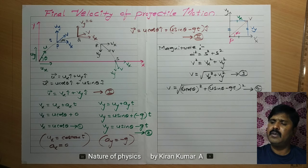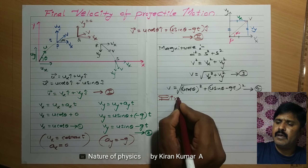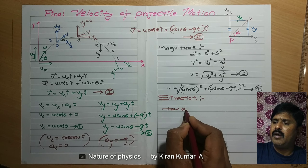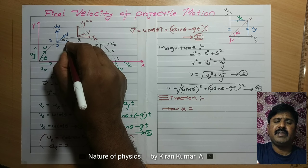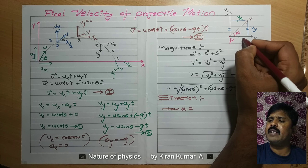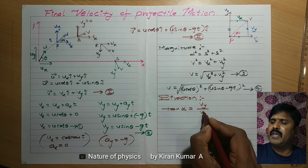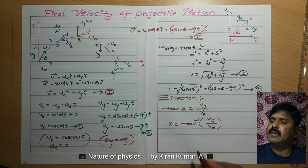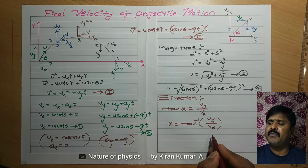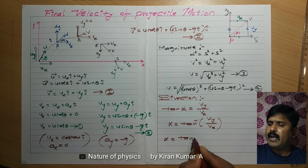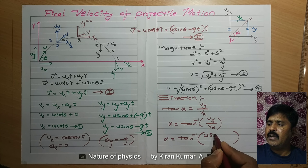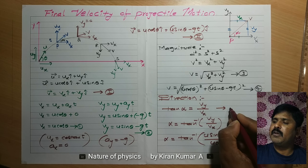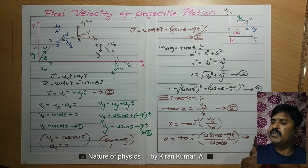We can also find the direction. For direction, there is a clear triangle. This is tan alpha, where alpha is the angle the final velocity makes with the x-axis. Tan alpha is equal to opposite by adjacent side — opposite is Vy and adjacent is Vx. So alpha is equal to tan inverse of Vy divided by Vx. Replacing Vx and Vy values: alpha equals tan inverse of (U sin theta minus G·T) divided by (U cos theta). This is equation number 5, and also written as equation number 6. This is clear information about the final velocity of projectile motion.